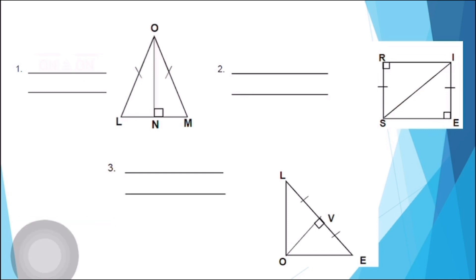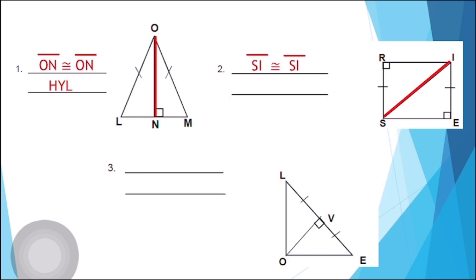Time's up. Now let's check your work. For number one, line segment ON is congruent to line segment ON, and the theorem here is HL, the hypotenuse and leg. For number two, line segment SI is congruent to line segment SI, and the theorem is HL. For number three, line segment VO is congruent to line segment VO, and the theorem is LL, the leg and leg theorem.